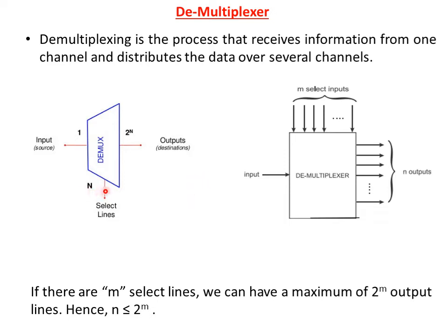This is the symbol representation of D-multiplexor and this is the block diagram representation. Here the input is 1 and 2 power n outputs and n number of selection lines. Similarly, in the block diagram representation, the input is 1 channel, the output is 2 power n channels and n number of selection lines.